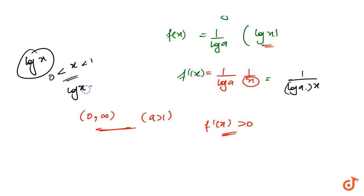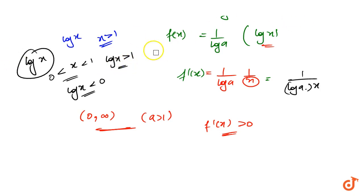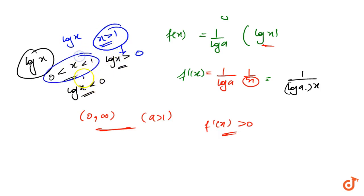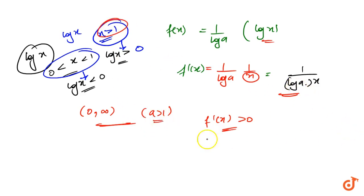We know that if x is between 0 and 1, log(x) is negative, and if x is greater than 1, log(x) is greater than 0. Now the condition is a > 1, which means log(a) is positive. Also, x ranges from 0 to infinity, meaning x is always positive. So we have: positive (log a) × positive (x) in the denominator, making f'(x) positive.